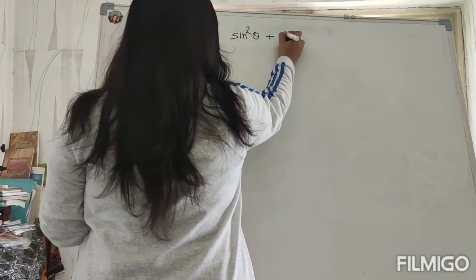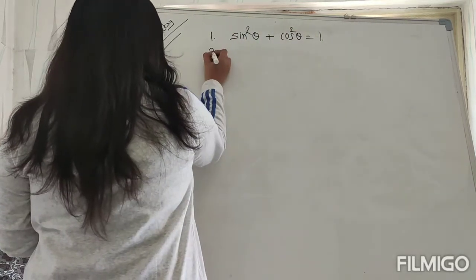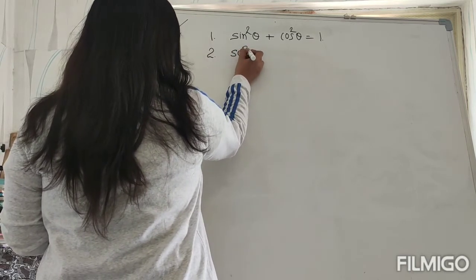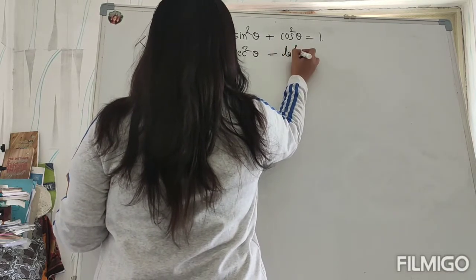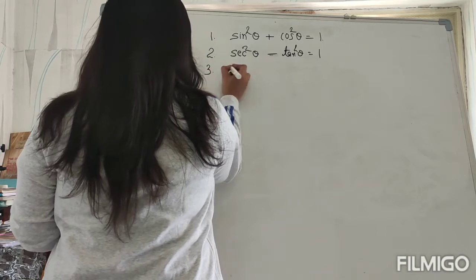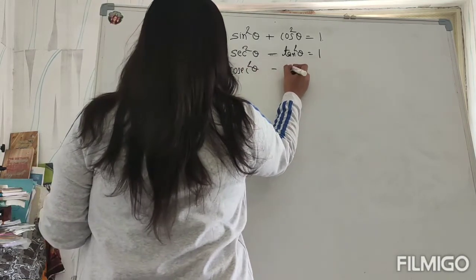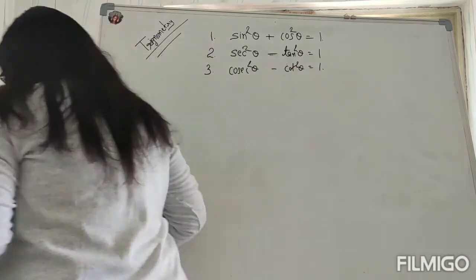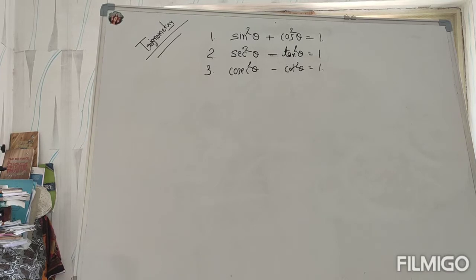sin²θ + cos²θ = 1. This identity I have already told you. Second is sec²θ - tan²θ = 1. And cosec²θ - cot²θ = 1. We have already done these. So keep these identities in mind because we will have to use them in these questions.